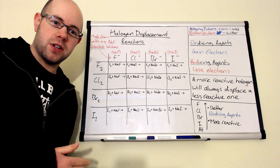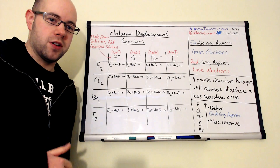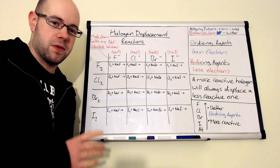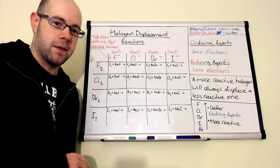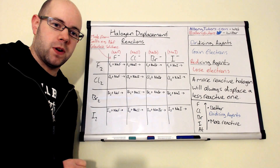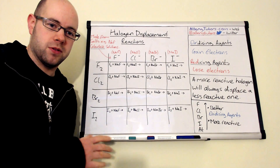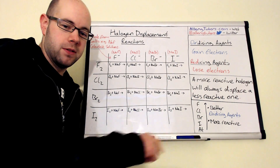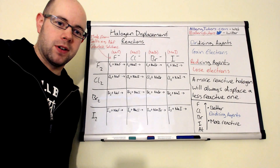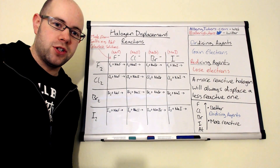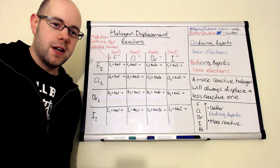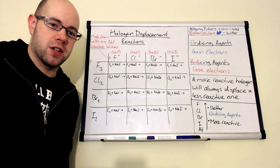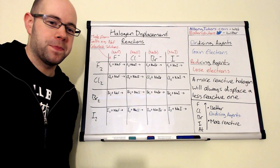There is a video that looks into oxidation, reduction and the explanation behind it in terms of electrons. If you're not sure what oxidation or reduction is, or the agents regarding them, just click on the link below. For this video, I'm going to assume that you know what an oxidizing and reducing agent is and the process of oxidation and reduction.